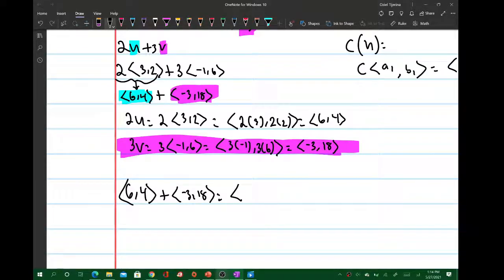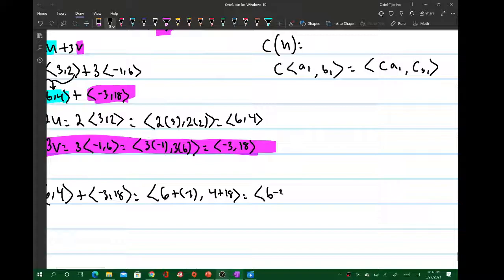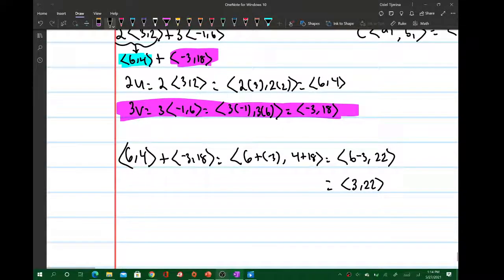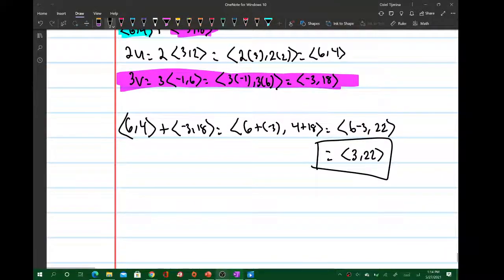This is just the vector, the x component 6 plus -3, comma 4 plus 18. So this is going to equal the vector 6 minus 3 comma, and 18 plus 4, that's 22. So the final vector will be <3, 22>. So this, ladies and gentlemen, is what 2u plus 3v equals.